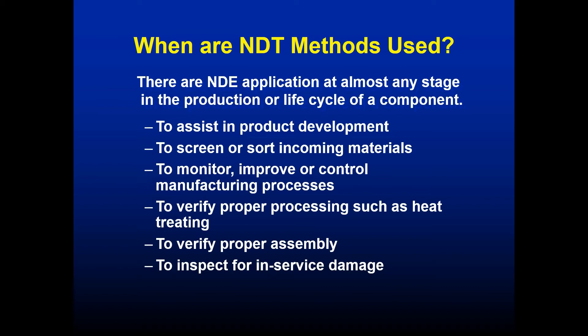NDT can verify proper processing such as heat treating, coatings, paint, and anodization. It verifies proper assembly — whether through nuts and bolts, welding, or even explosive welding — using X-ray to confirm full fusion. It also inspects for in-service damage such as corrosion, erosion, and stress fractures. The first five uses are grouped under quality assurance and quality control; the sixth — in-service inspection — is what is typically defined as NDT, NDE, or non-destructive inspection.